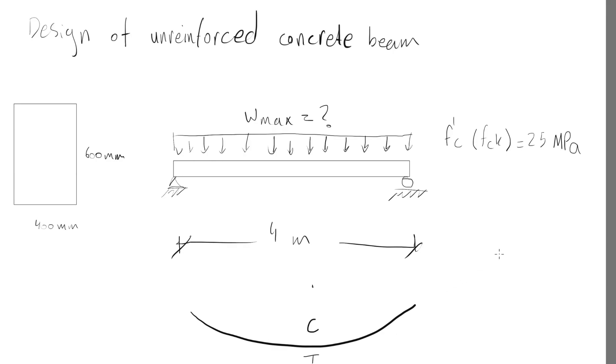The compressive strength of the concrete is given as 25 megapascal and the tensile strength of the concrete we should find. Usually the tensile strength of the concrete is about 10 to 15 percent of the compressive strength. So it will be the controlling value in this case because the concrete is weak in tension but strong in compression.